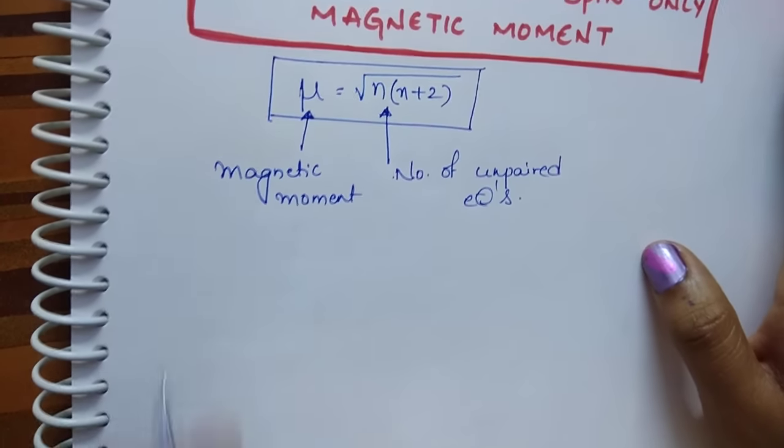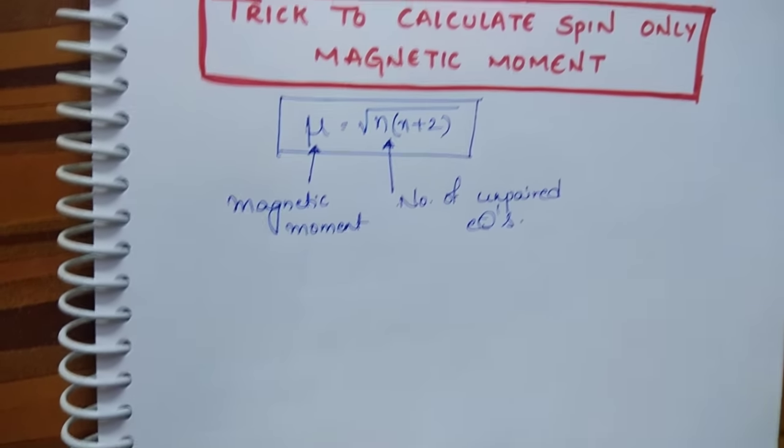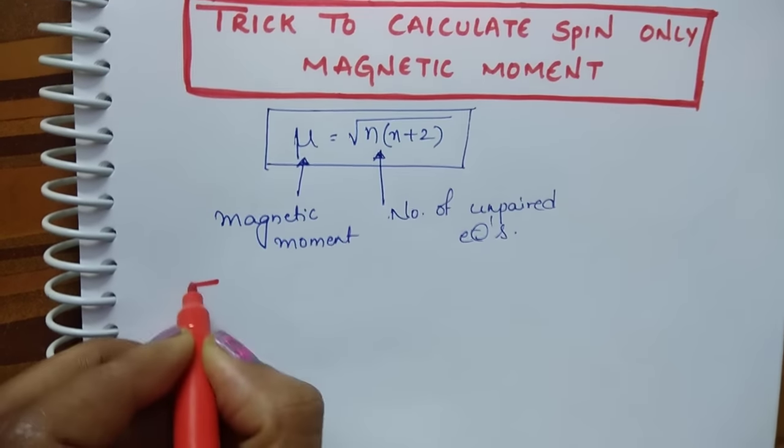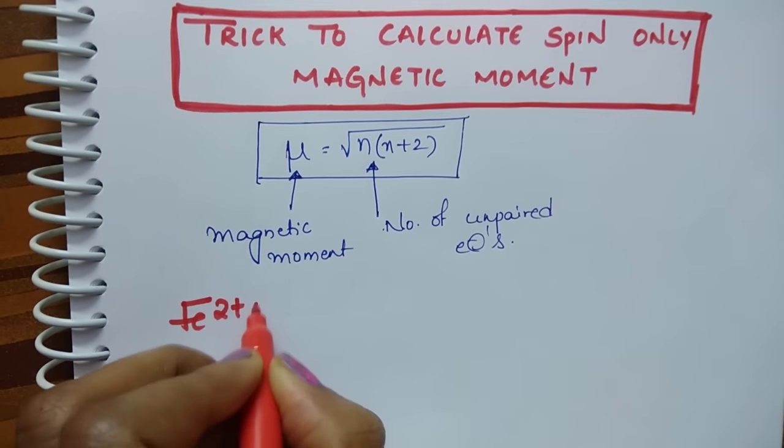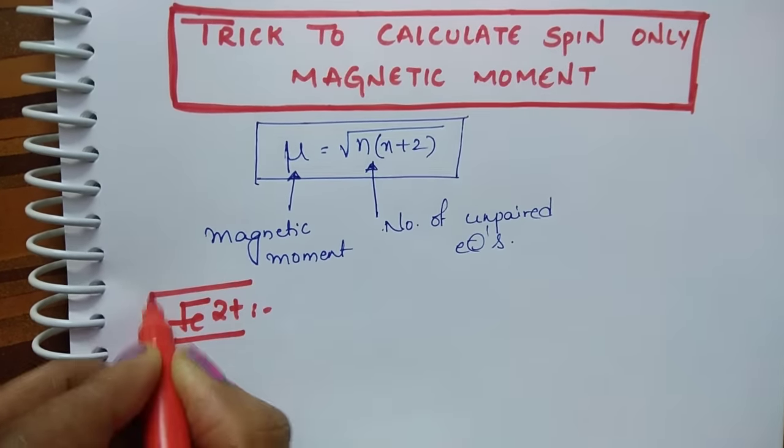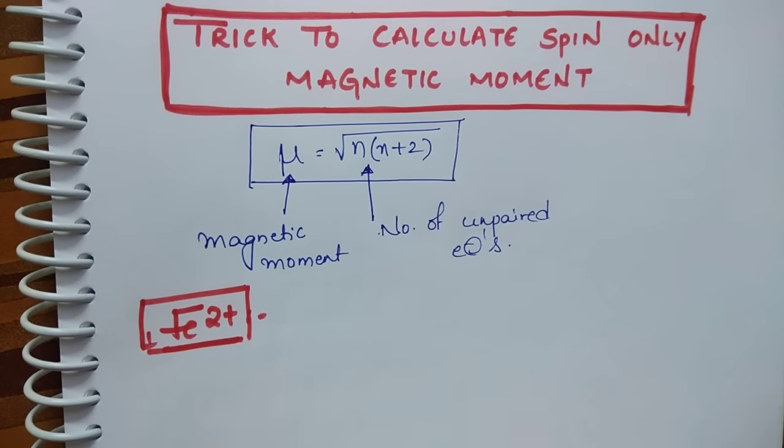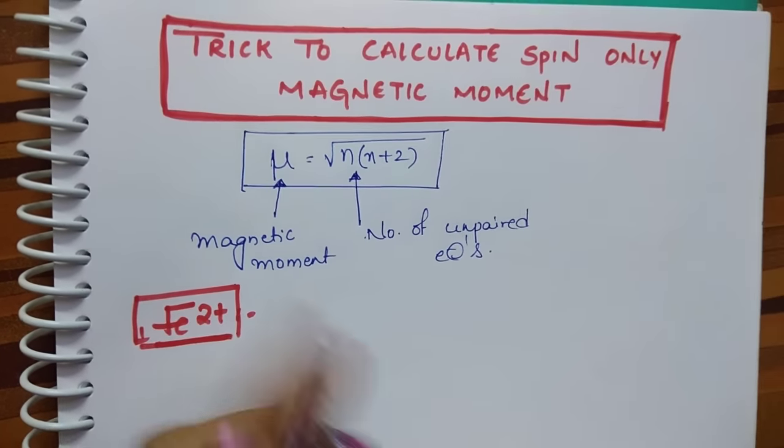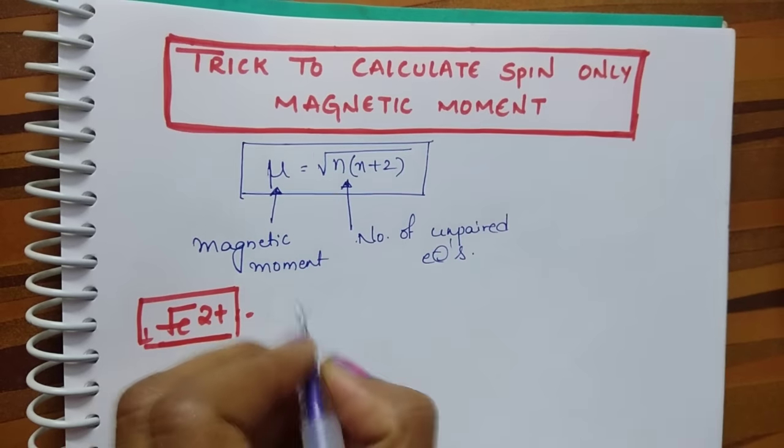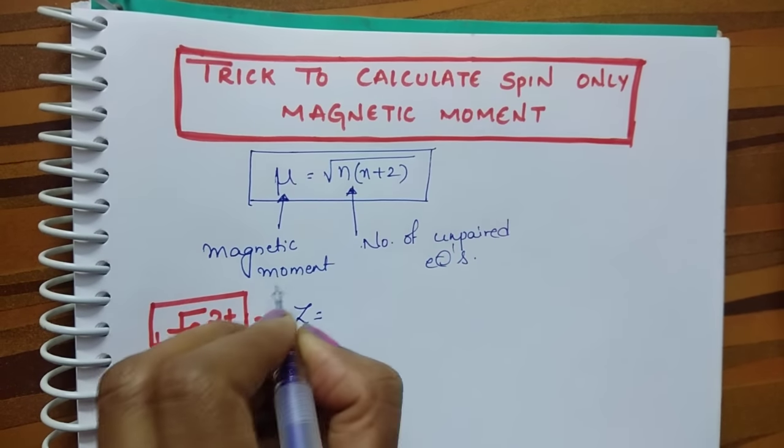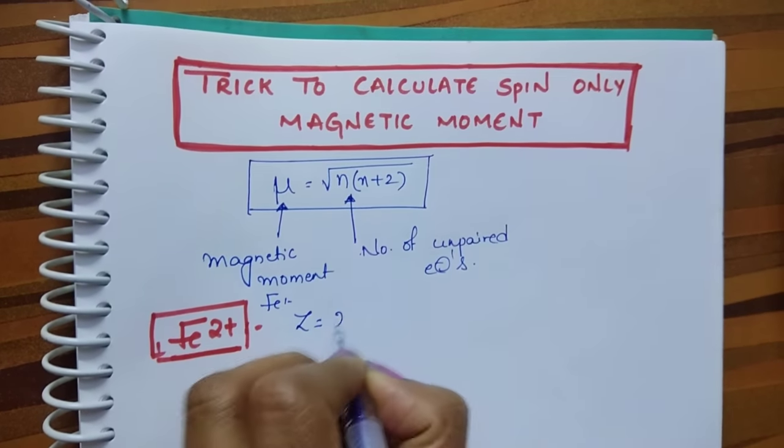Let us start with an example. Find the magnetic moment for Fe²⁺. What is the atomic number of Fe? Fe atomic number is 26.